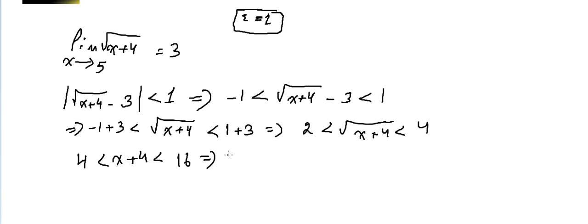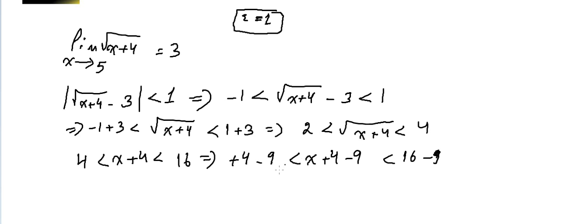Now we need to isolate X minus 5. We subtract 9 from all sides: 4 minus 9 less than X + 4 minus 9 less than 16 minus 9. First subtract 4 to get only X, then subtract 5 to get X minus 5. This gives minus 5 less than X minus 5 less than 7.